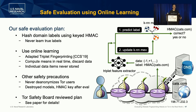Some other safety precautions: we were doing this at the exit relay and have never observed users directly, so we never de-anonymized Tor users. We're not doing anything beyond what an exit relay could do inside of Tor's threat model. Also, we destroyed the models and the HMAC key after our evaluation, so we cannot reproduce these results directly and have no way to reverse the pseudonyms or anything used in the evaluation.